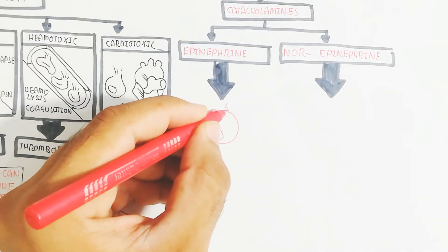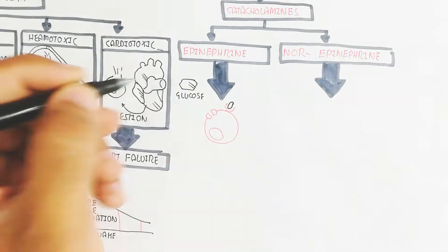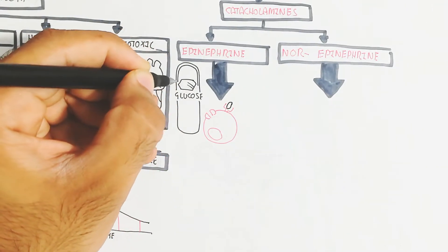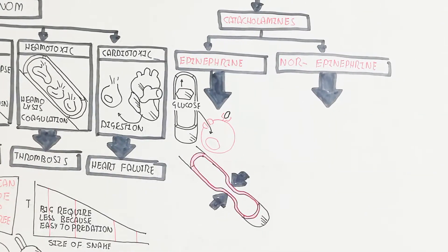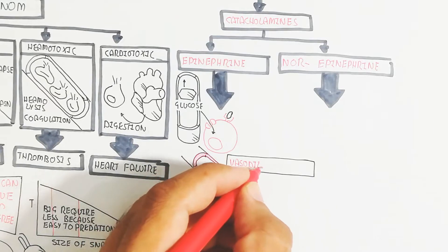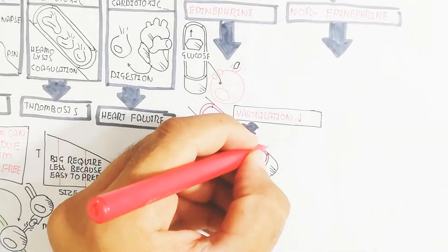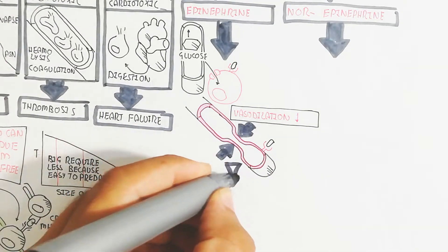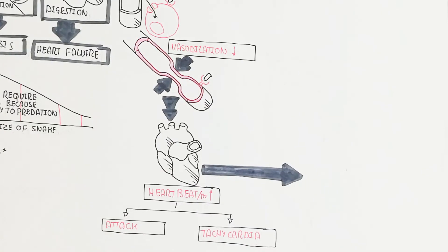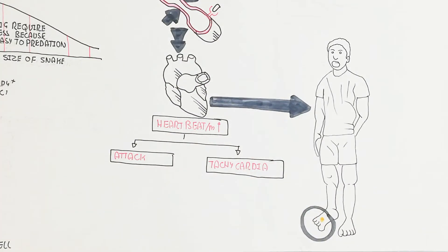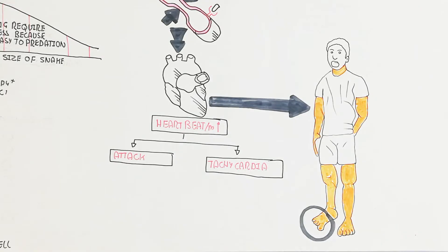Epinephrine causes glucose to move into cells due to high energy demand, leading to hypoglycemia and low blood pressure. Vasodilation is inhibited while vasoconstriction is activated through epinephrine binding to receptors on the endothelial and smooth muscle cells of blood vessel walls. Heart rate increases, leading to tachycardia, which spreads the venom more rapidly throughout the body, accelerating death.